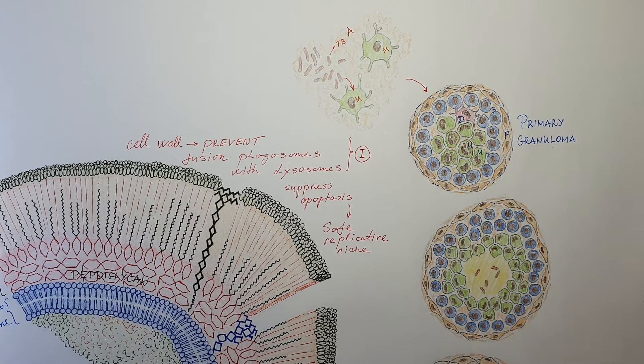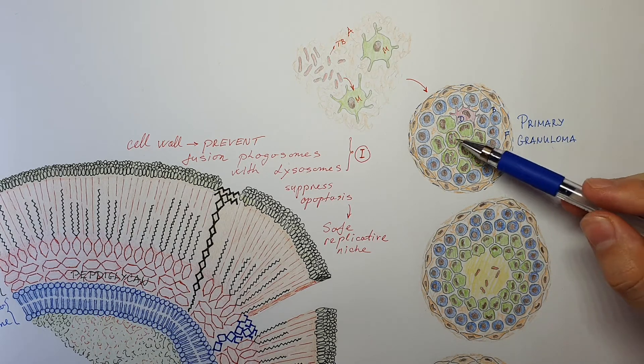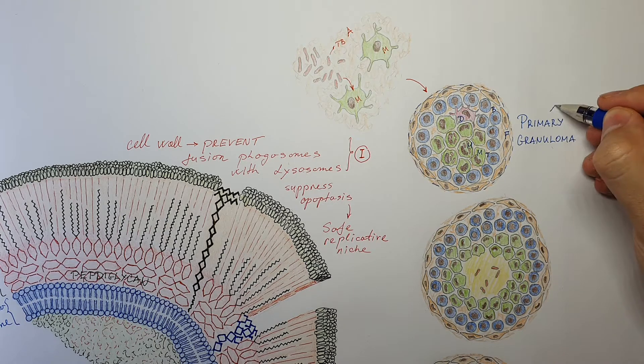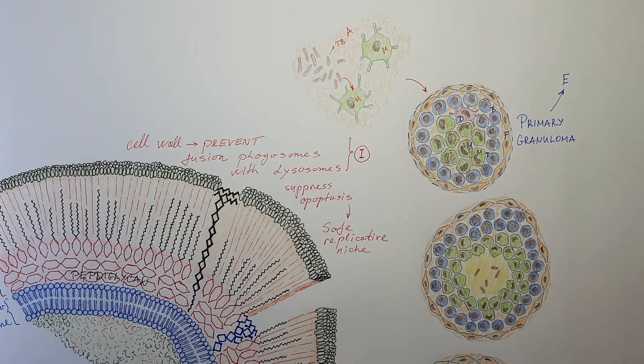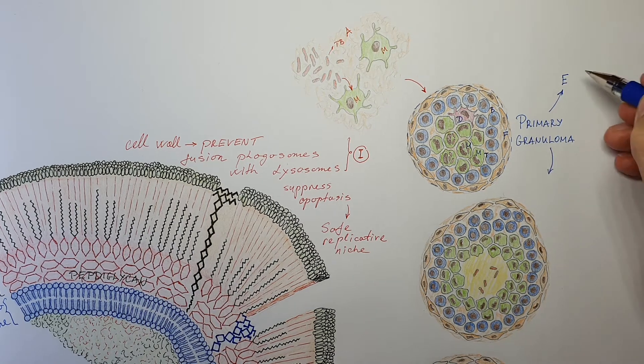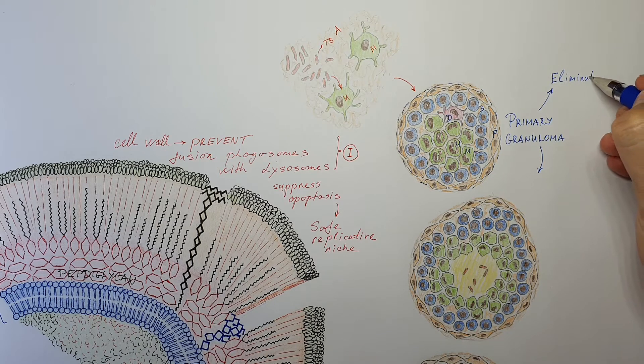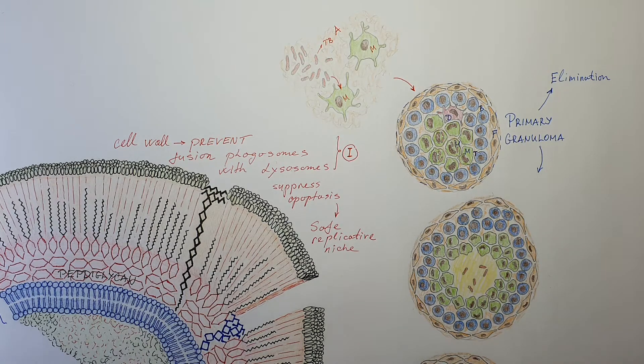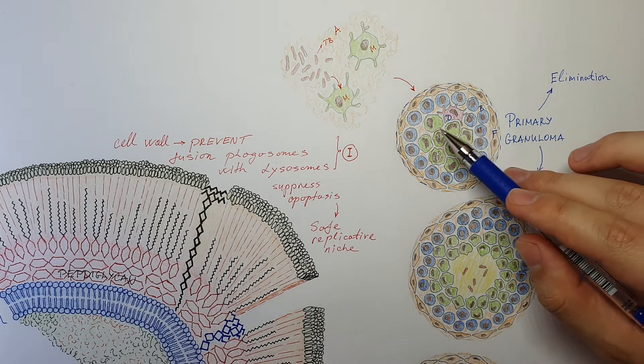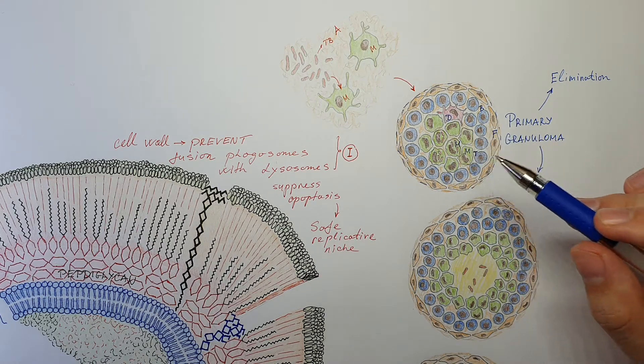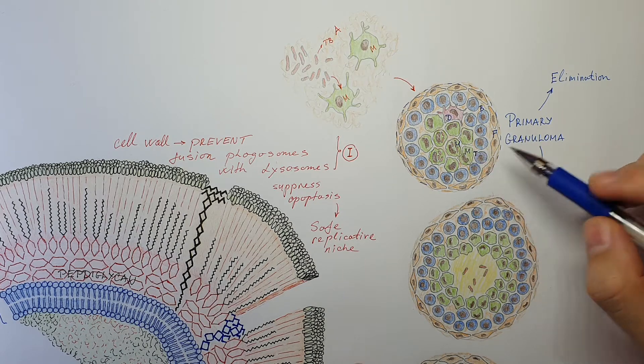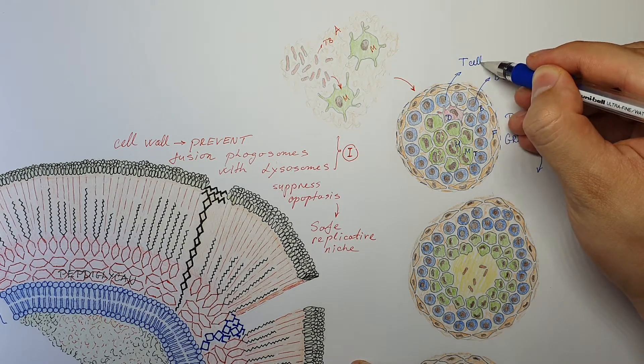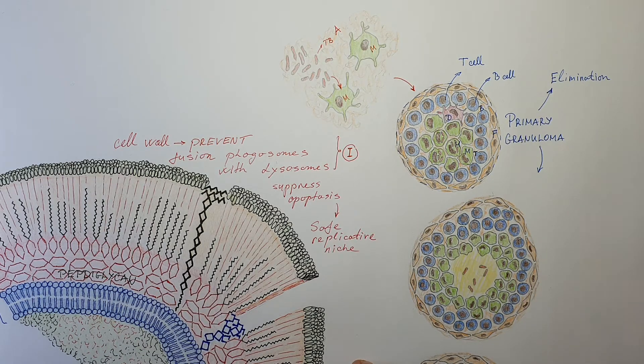So when a primary granuloma forms, the pathogen is contained in the granuloma. There is a possibility for elimination. And the patient gets rid of the disease. But the second possibility is that the bacteria, with elimination, the disease is eliminated. Our immune system somehow eliminates the disease. The T and B cells contribute with a strong immune reaction to eliminate all bacteria and infected macrophages. So B cells and T cells are very important in containing this infection or eliminating it.